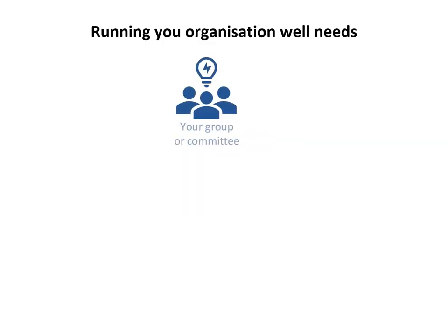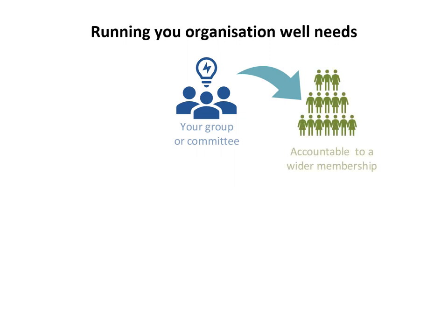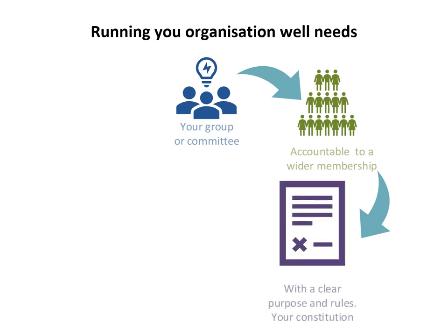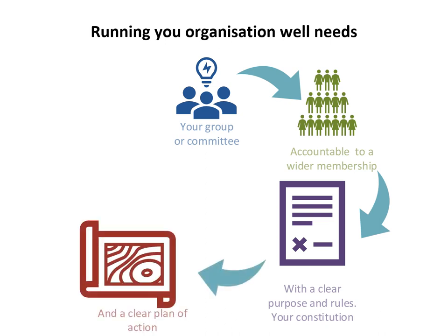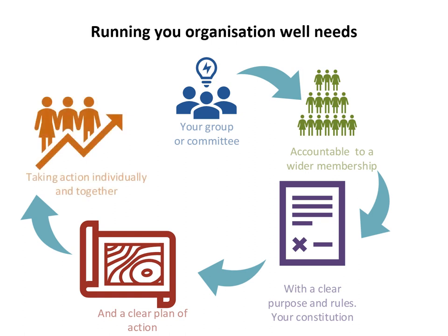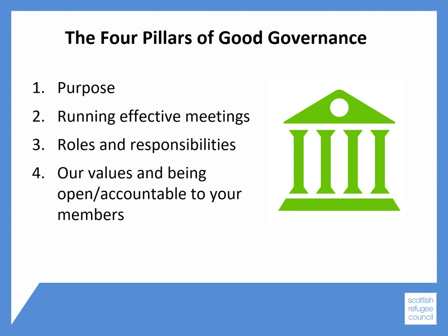Running your organisation well needs a good group or committee willing to work together to get things done. That group needs to be accountable to the wider membership through regular dialogue about the issues that matter. There needs to be a clear purpose and rules stated in a constitution, and a clear plan of action to get the things you talk about wanting to achieve happening in reality. As a group, you need to take action individually and together as a committee, and wherever possible involving your wider membership. The rest of this module will focus on these four pillars of good governance, how your values affect the way that you work, and how you're accountable to your members.